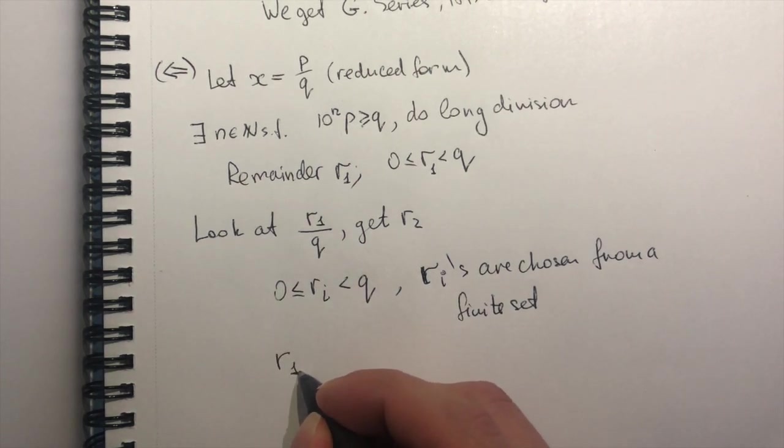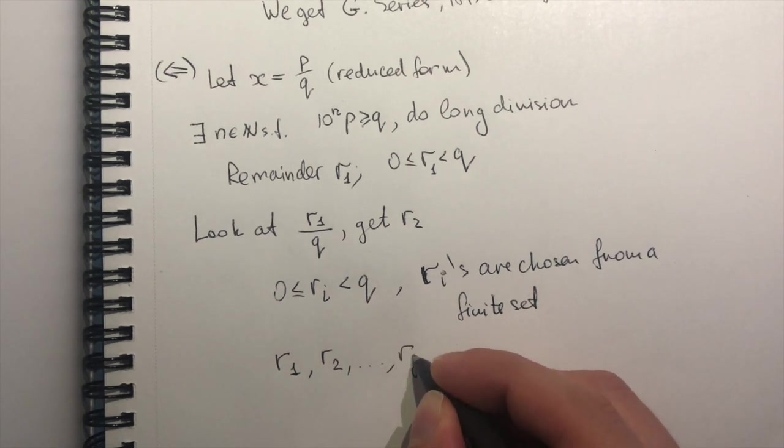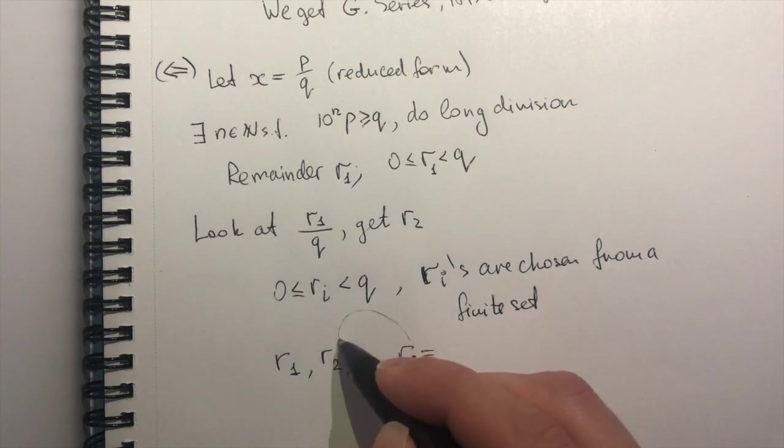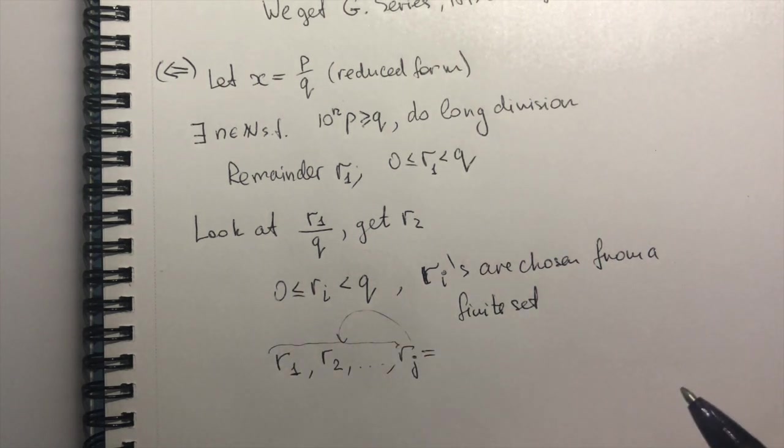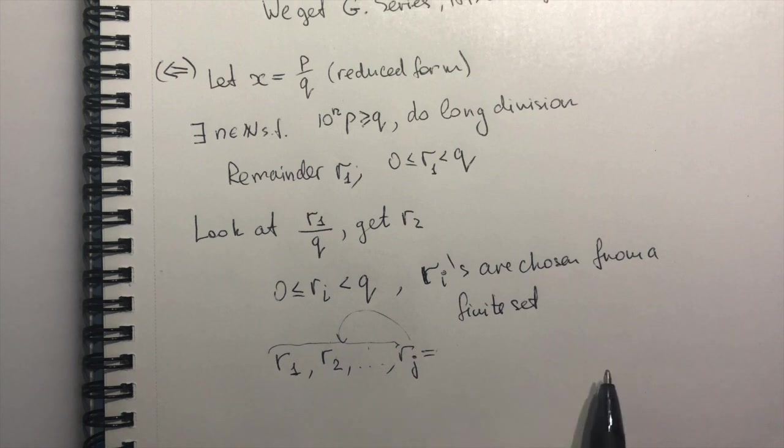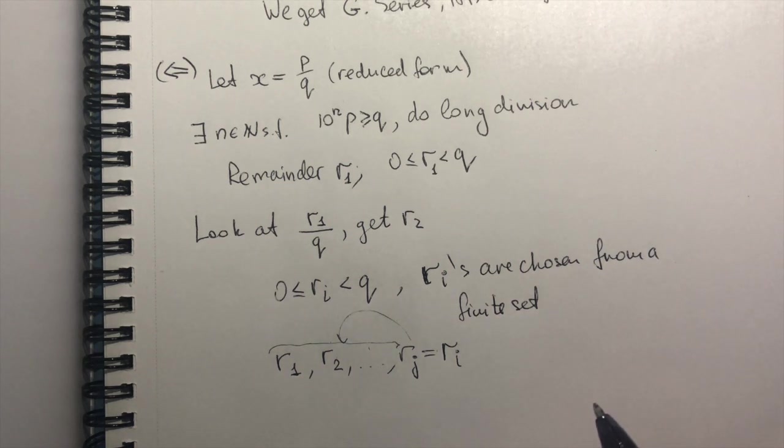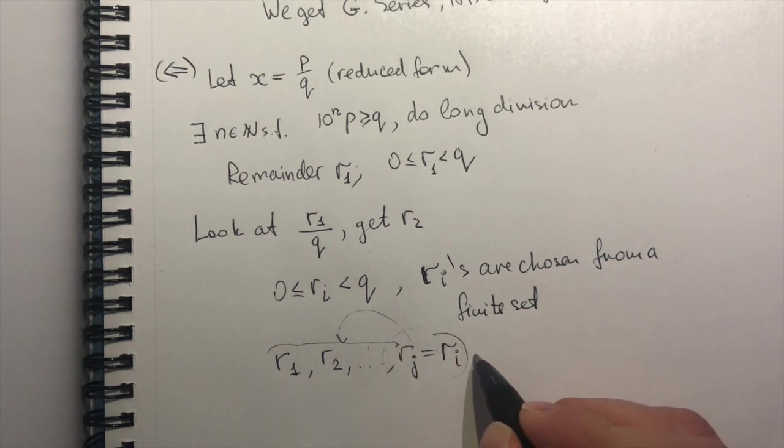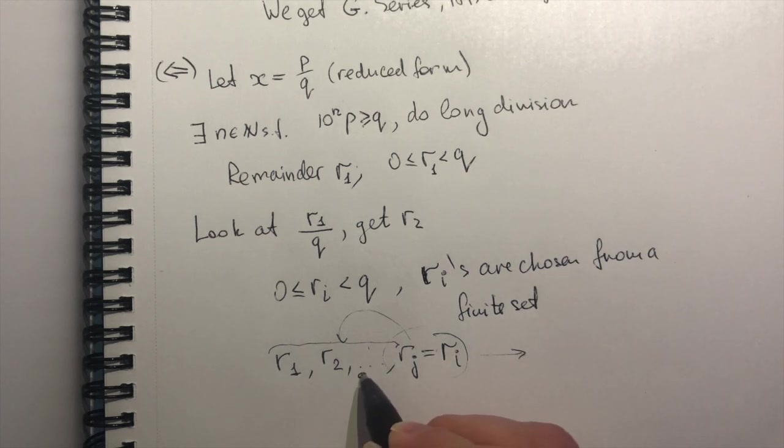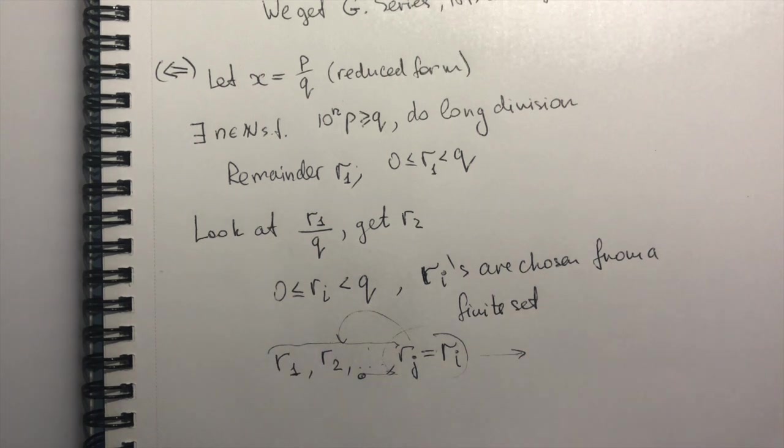But so here's my first remainder r₁, then it's going to be r₂. And then for some remainder, I will get that it's equal to some of these earlier remainders, right? Because the set from which it is chosen is finite. So if I do as many divisions as I can, I will have to repeat the remainder. But of course, once that happens, what follows after that repeats exactly what happened here. So if my rⱼ equals r₃, my next remainder will be r₄, and so on. And here's how we come to the preperiodic expansion.